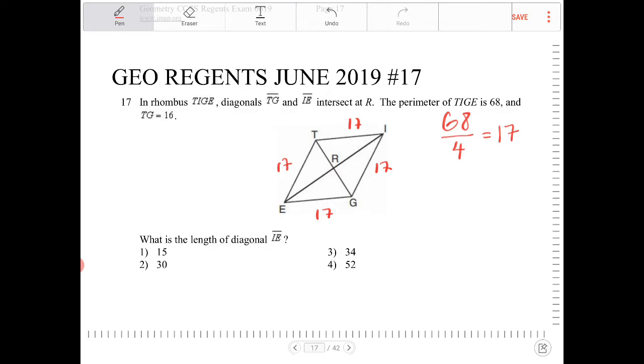So if TG measures 16, then TR will measure 8 and RG will measure 8. So now the question is asking for what is the length of diagonal TE, of IE.